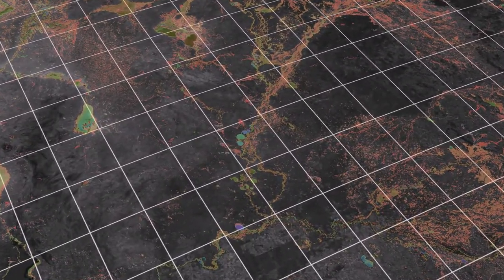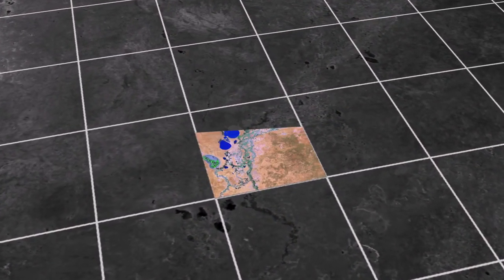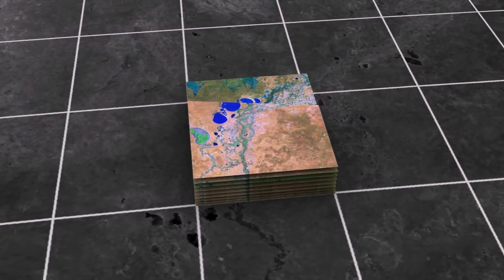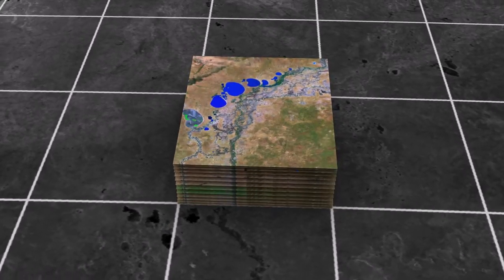Each image is processed to work out where, in each observation, water covers the landscape, allowing us to see features such as lakes and rivers empty and fill over time.